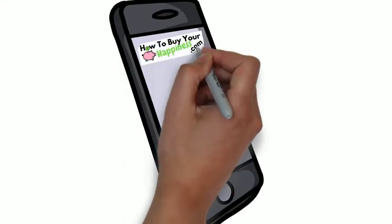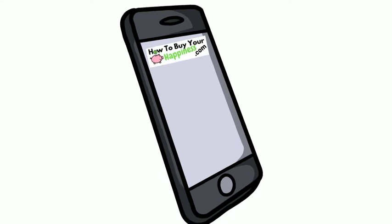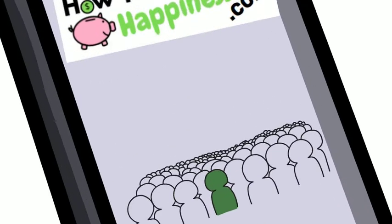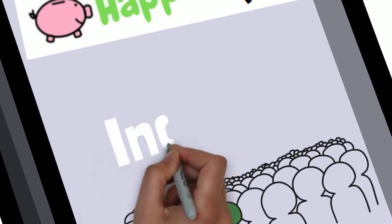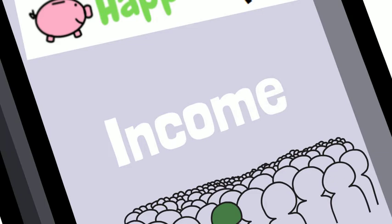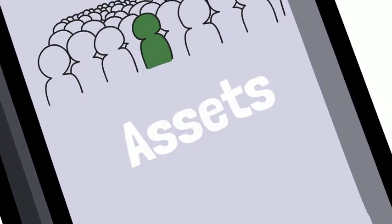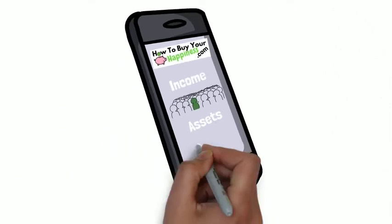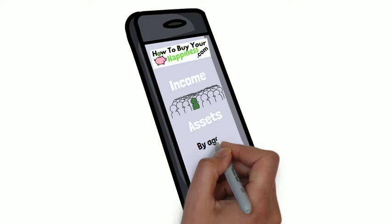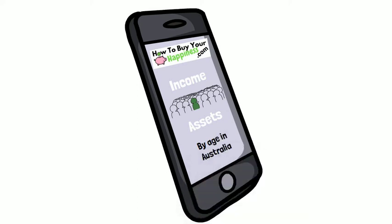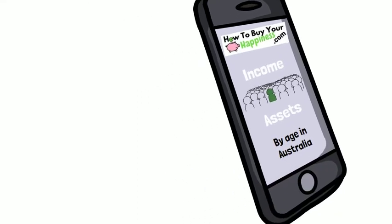First up, let's just check that you clicked on the right video. I'll be showing you data where you can find out where you sit amongst other Australians in regards to both your income and your assets, and then cross-reference this for your age. So like and subscribe — now let's start the video.